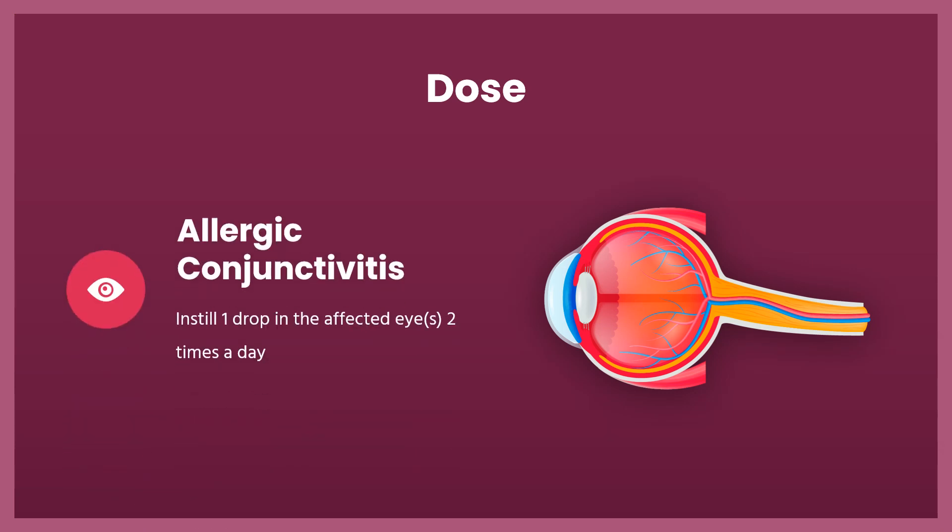Dose — For asthma: Adults and children 3 years of age and older, the usual dose is 1 mg (1 tablet or 5 ml of syrup) twice daily, once in the morning and once in the evening. Infants and children from 6 months to 3 years of age: dosing is based on body weight and must be determined by the doctor.